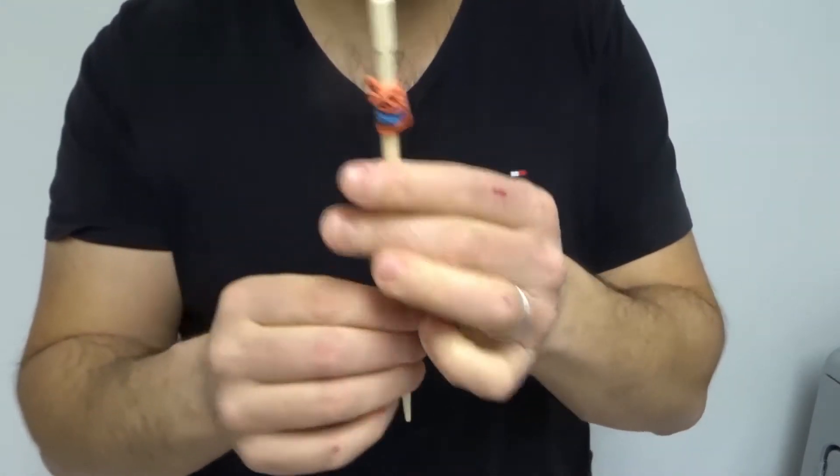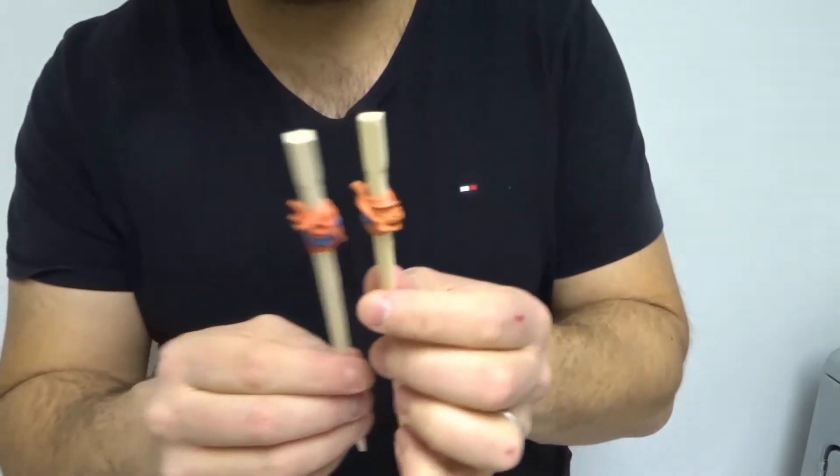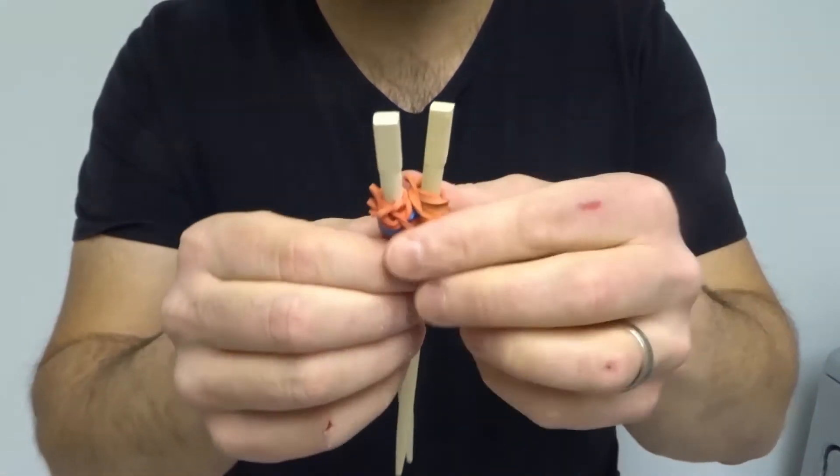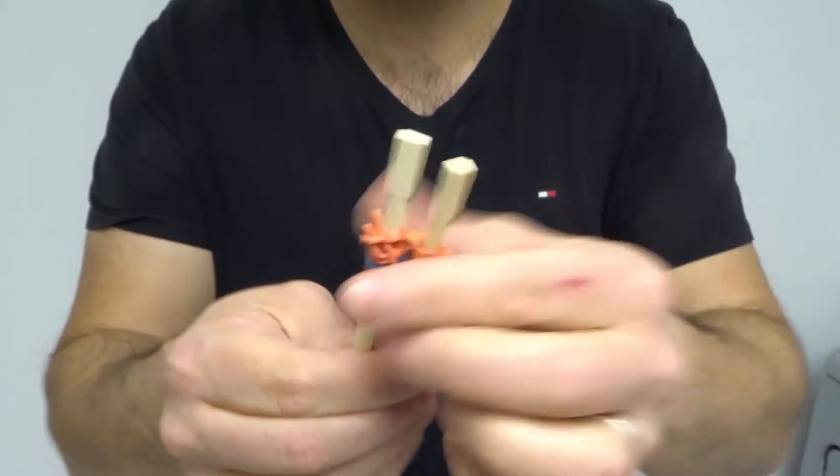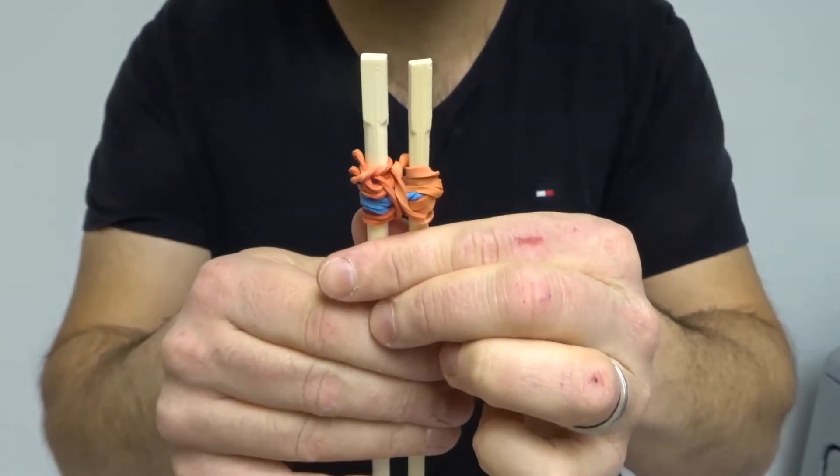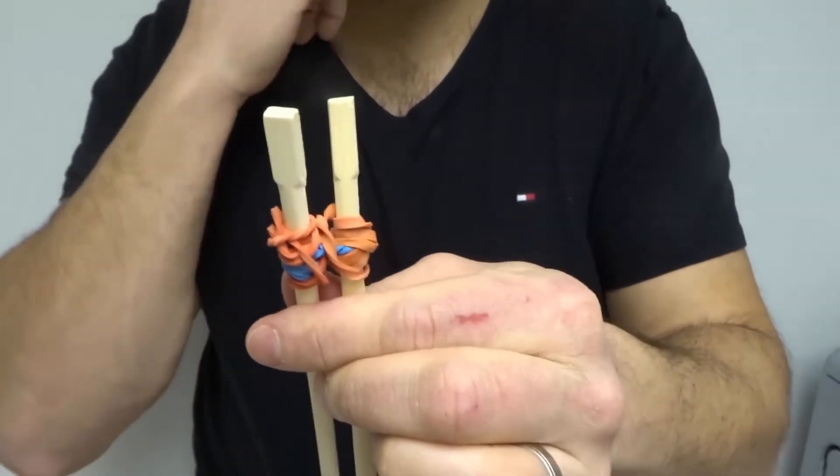We're in a good position here. As you can see, we've wrapped both rubber bands around, and the key factor here is that when I put the chopsticks together, there is a gap between them. Rubber band to rubber band, there is a gap.